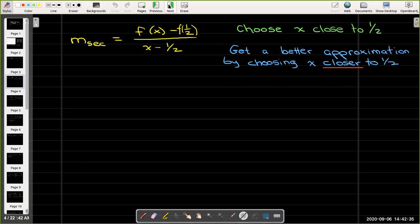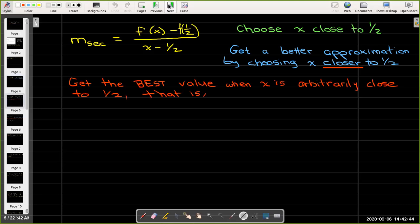If we want a better approximation, choose x even closer to 1/2. If we want the best approximation, meaning the exact value, we need to take x arbitrarily close to 1/2. And now we have a technique to mathematically precisely take x arbitrarily close to 1/2. That is, we take the limit as x approaches 1/2 of f(x) minus f(1/2) all over x minus 1/2.